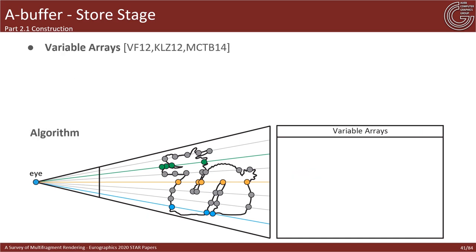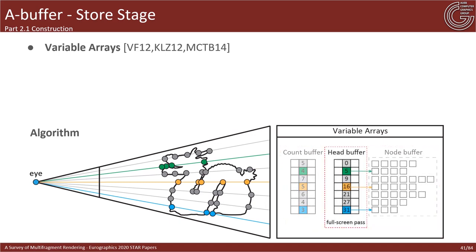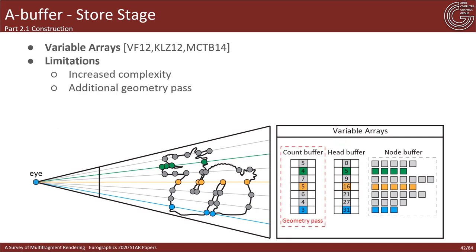Variable-size arrays attempt to combine the advantages of fixed-size arrays and linked-list structures by storing information in contiguous regions without over-allocating memory space. These methods require two additional passes before the storing stage: one geometry pass to count the exact number of fragments needed for allocation, and a screen-space pass to compute per-pixel head pointers through a prefix sum operation, followed by the actual geometry pass that fills the memory space. On the downside, these methods are more complex to implement and can be less efficient on scenes with high geometric complexity due to the extra geometry pass required.